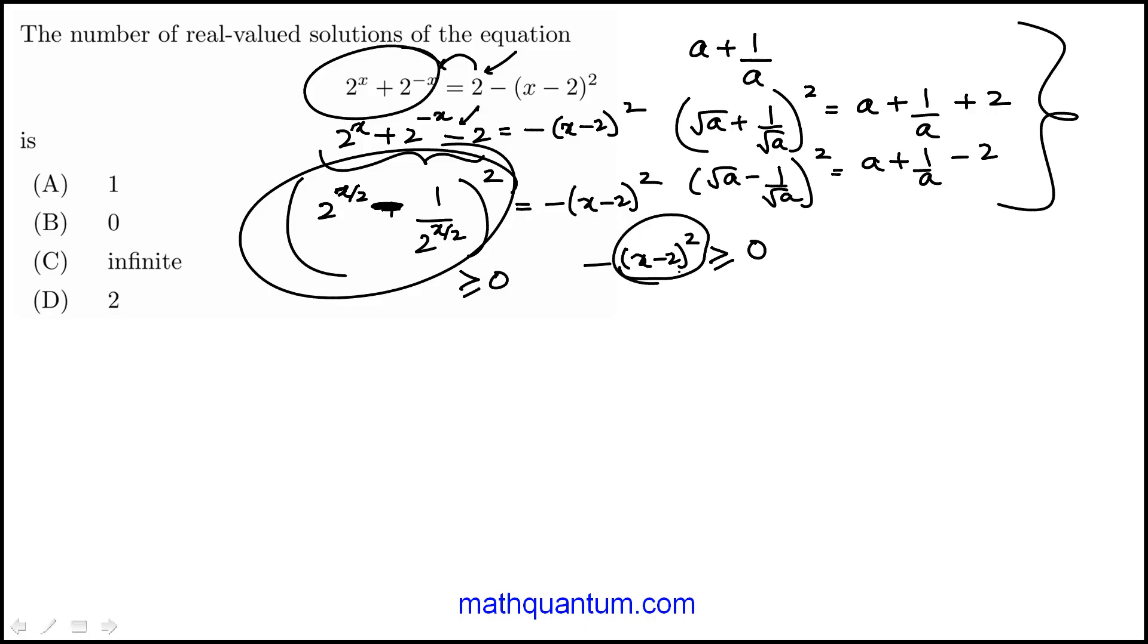Since that's always positive and we have a condition minus of a positive number, the only way this condition would be satisfied is if x minus 2 squared is 0.